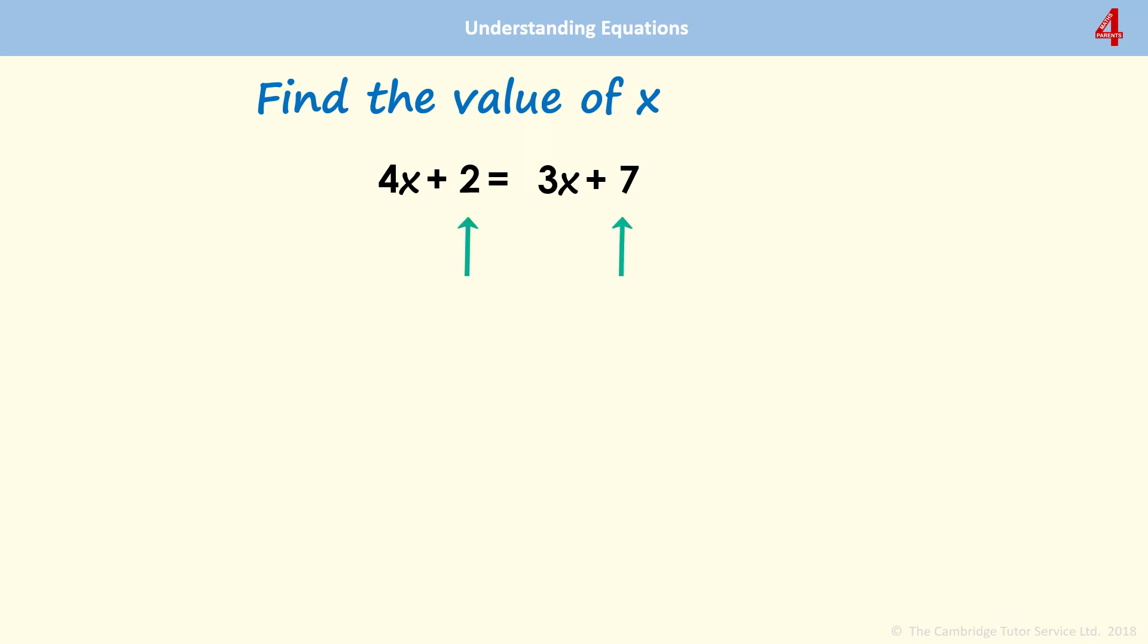I always look for those extra numbers. If they're positive, I choose the smallest one and I get rid of that. So here, the smallest of those extra numbers is 2. So I'm going to take away 2 from each side. So now I have just 4x on this side. I've taken that 2 away. And on the other side, I have 3x. And because I've taken 2 away from both sides, that 7 is now at 5.